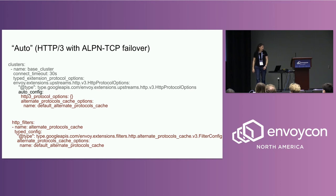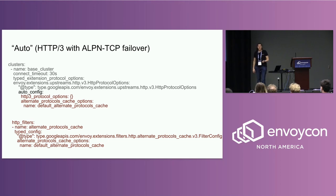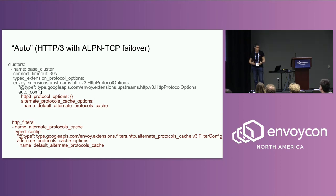For auto-config, it looks a lot like auto-config for HTTP2 — you just specify your HTTP3 protocol options. But this time you have to include your alternate protocols cache. It's required because Envoy won't work without it; it won't remember that the endpoint supported HTTP3. So we just fail config on startup so you can't make that mistake. Same thing in your filter chain — you configure that service cache so that as you get response headers, we insert into that cache so Envoy will remember what protocol was used.